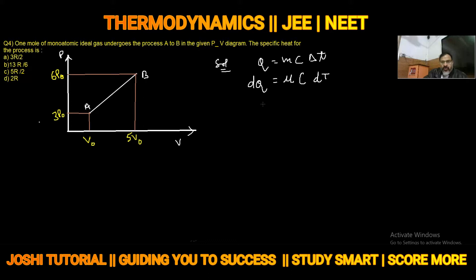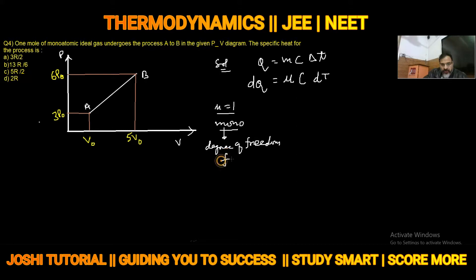In this problem, one mole monoatomic gas is given, so mu = 1. And since the gas is monoatomic, degree of freedom F = 3. We can use this concept later if needed. DQ = CDT, therefore specific heat C = DQ/DT.